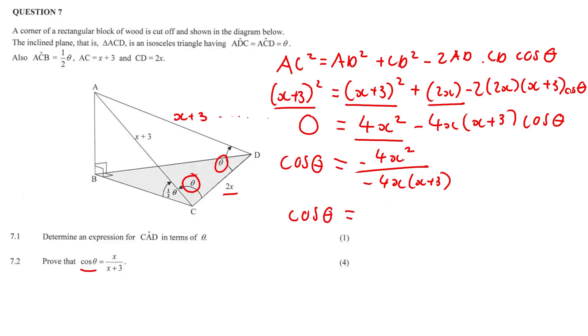Therefore, cos theta is equal to... the negative 4x's cancel each other out. Remember there's no negative 4x squared on this side, so there's just going to be x at the top. So final answer is x over x plus 3.